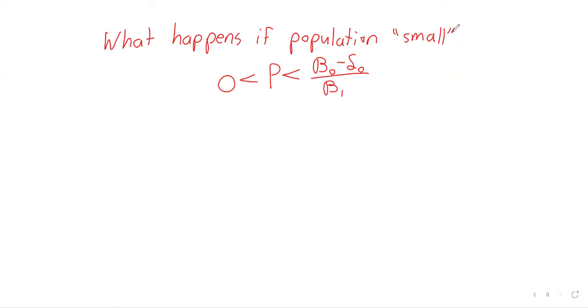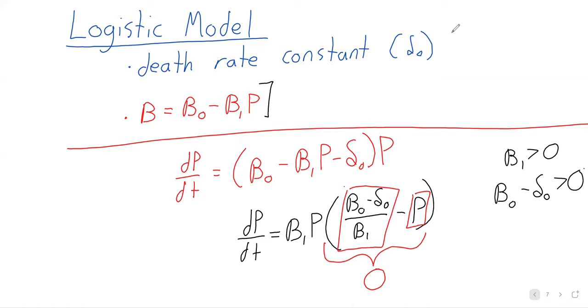Now, if the population is less than the carrying capacity, let's go back to this differential equation. If the population is less than this carrying capacity, then when we do this subtraction, we get a positive number. Then we've got a positive constant times a positive population times a positive number. The derivative is positive. And remember that a derivative is a rate of change. If a derivative is positive, then something's increasing. The population is increasing.